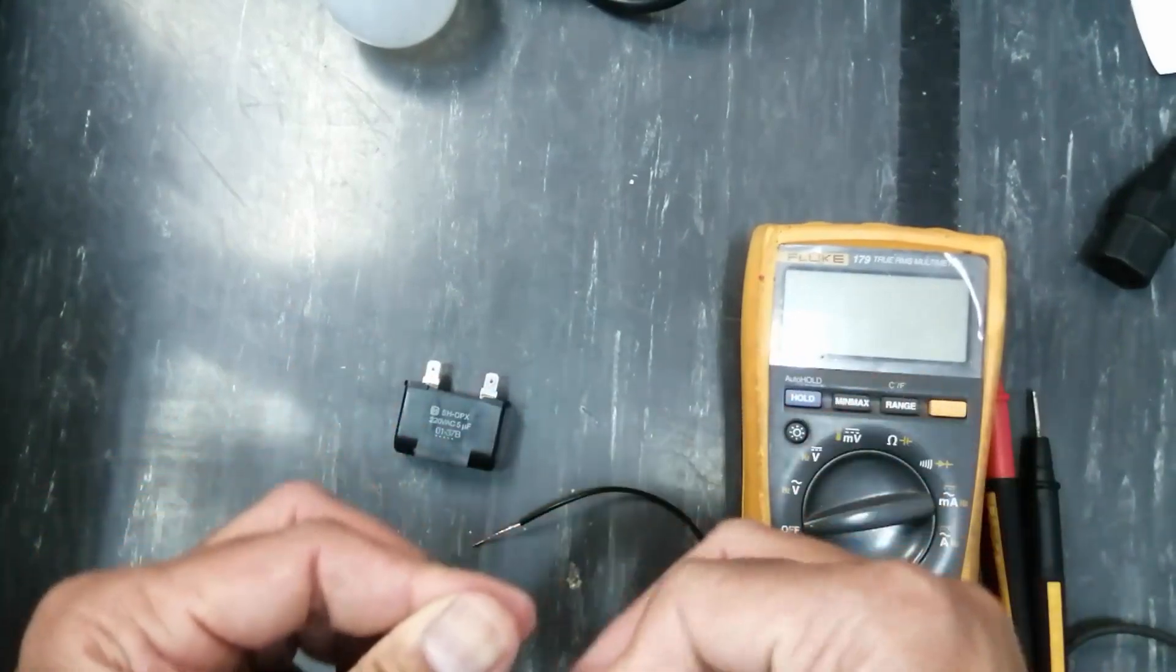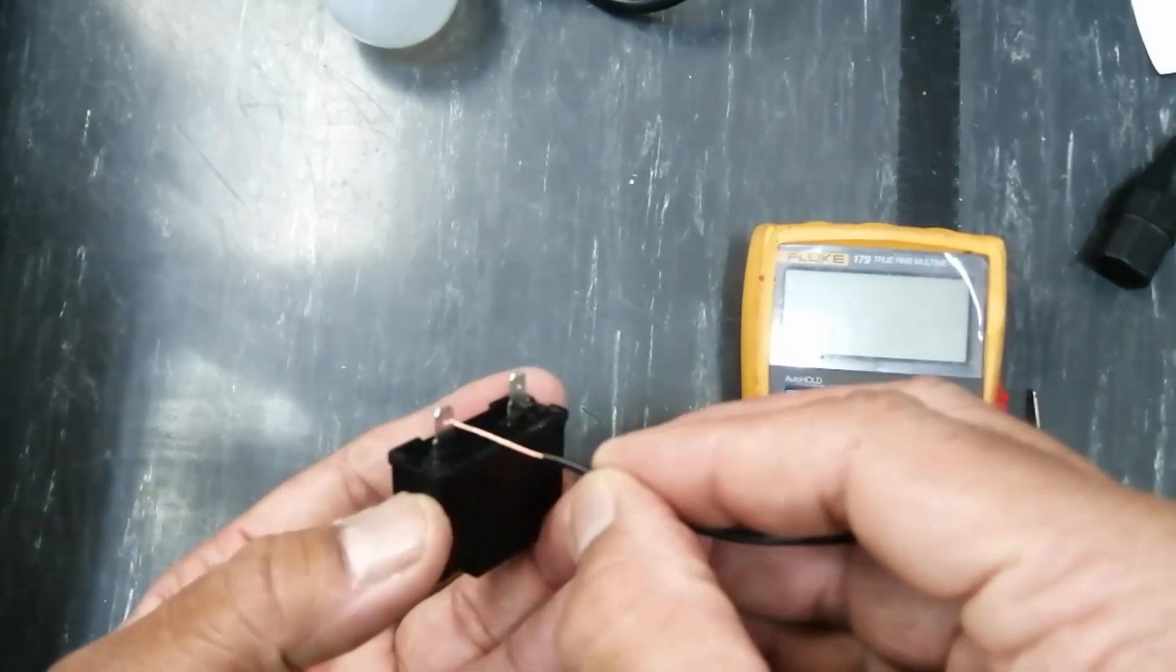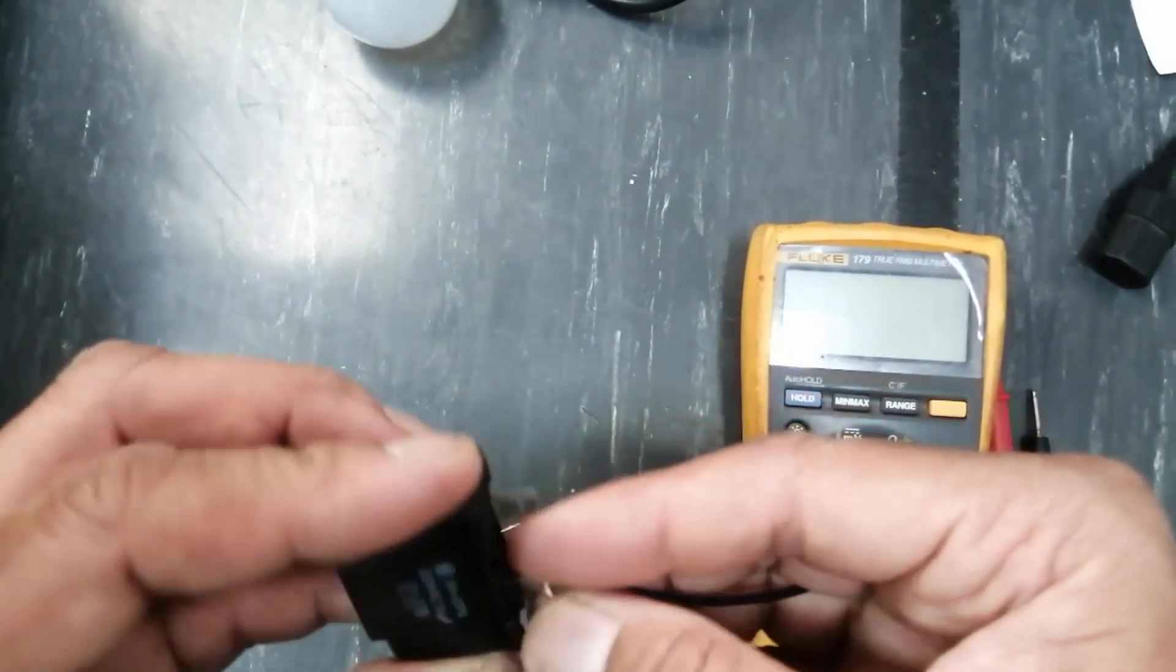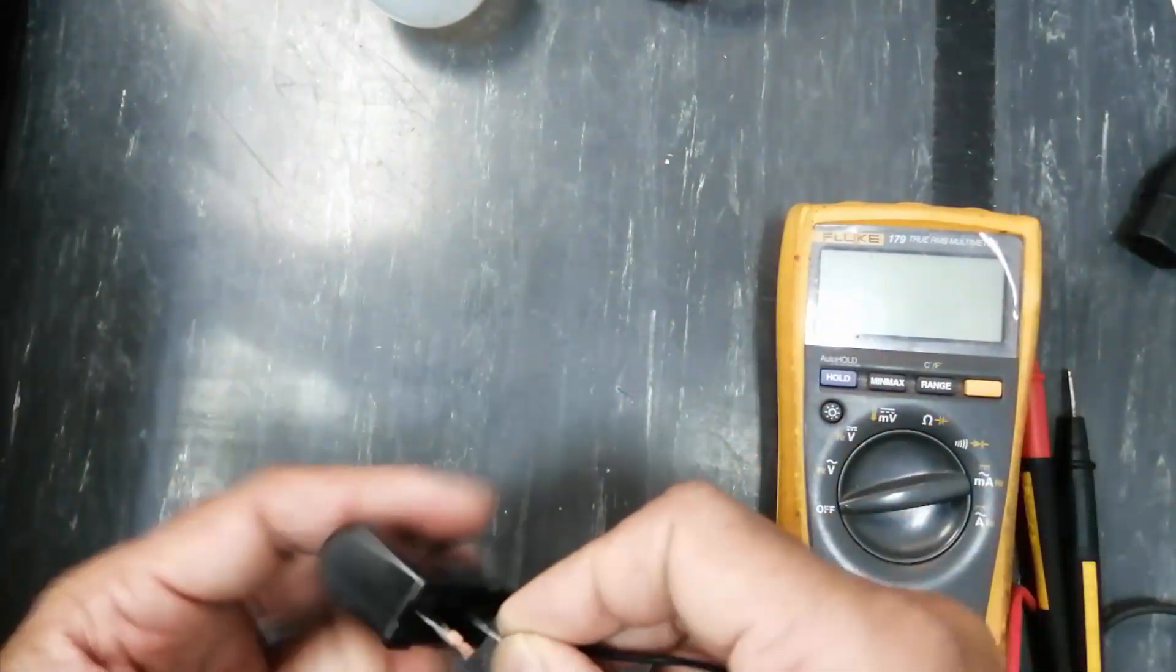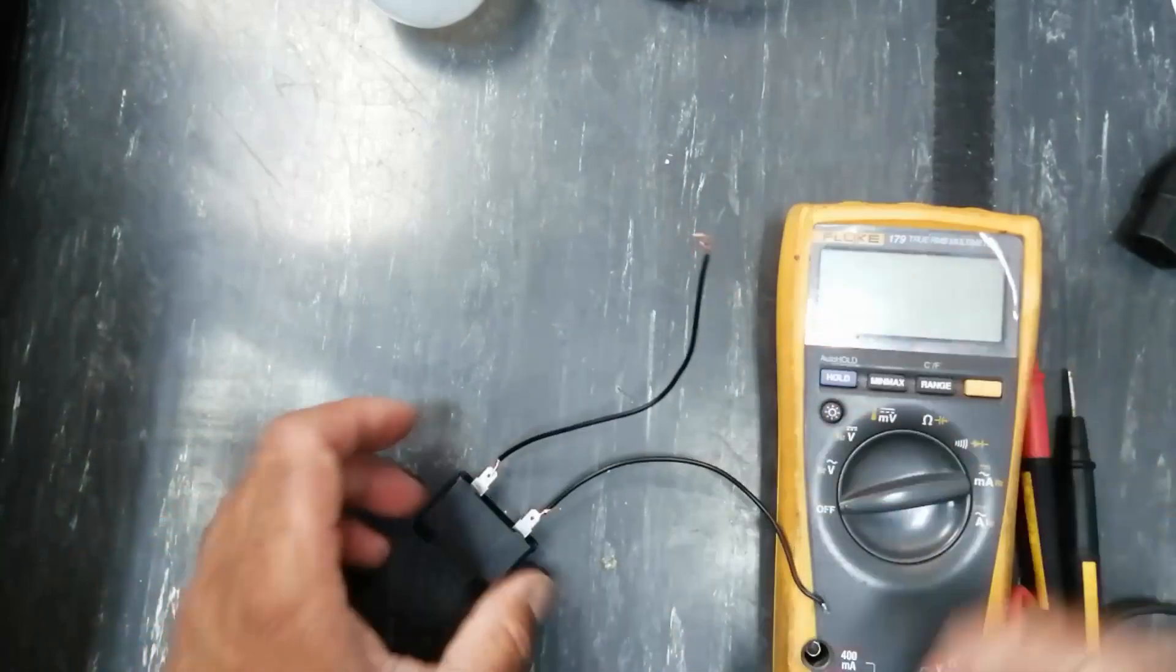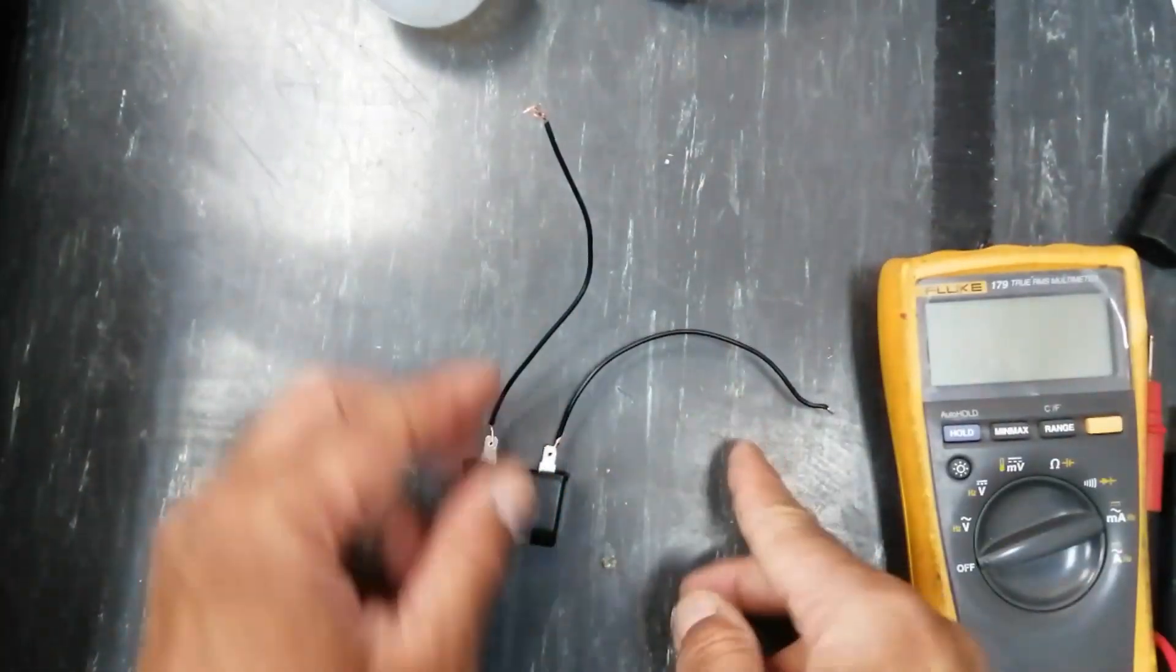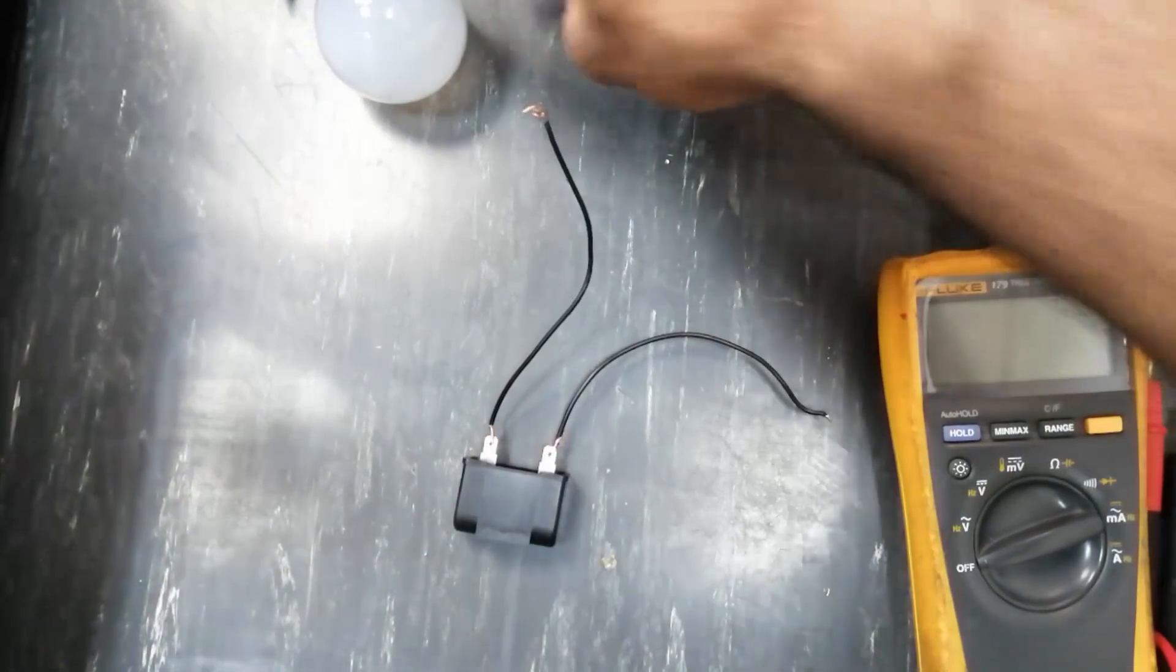We will install two wires to the capacitor. Now we have two wires connected, and I have this series lamp. We will connect to the series lamp. The lamp should glow full.